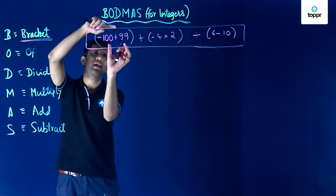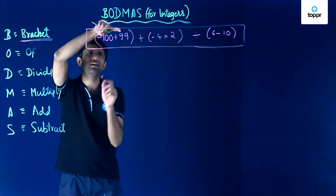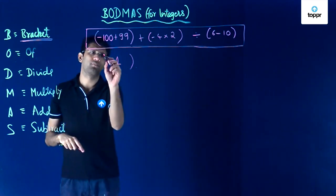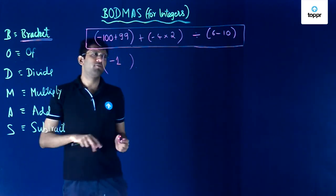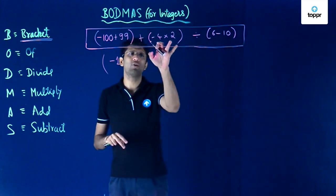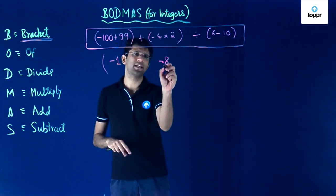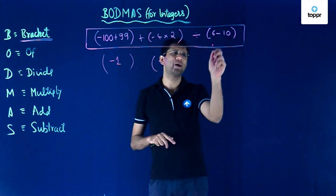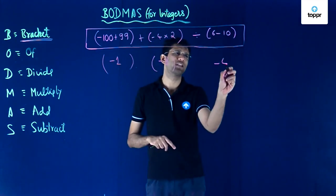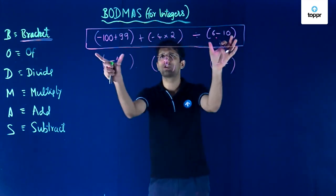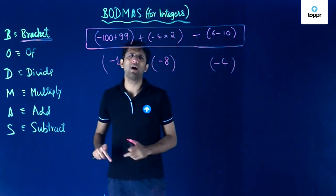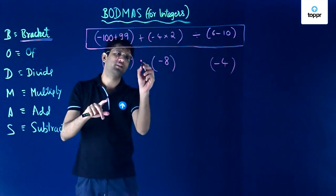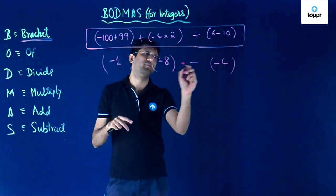Looking at the first bracket, minus 100 plus 99 gives minus 1. The second bracket, minus 4 into 2, gives minus 8. The third bracket, 6 minus 10, gives minus 4. Now the brackets are resolved and we retain the rest of the operators: here there is a plus and here there is a division.